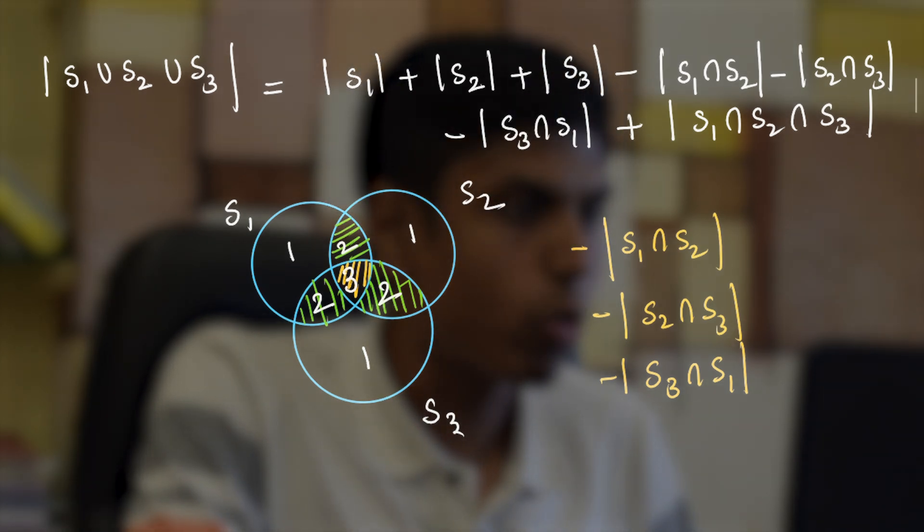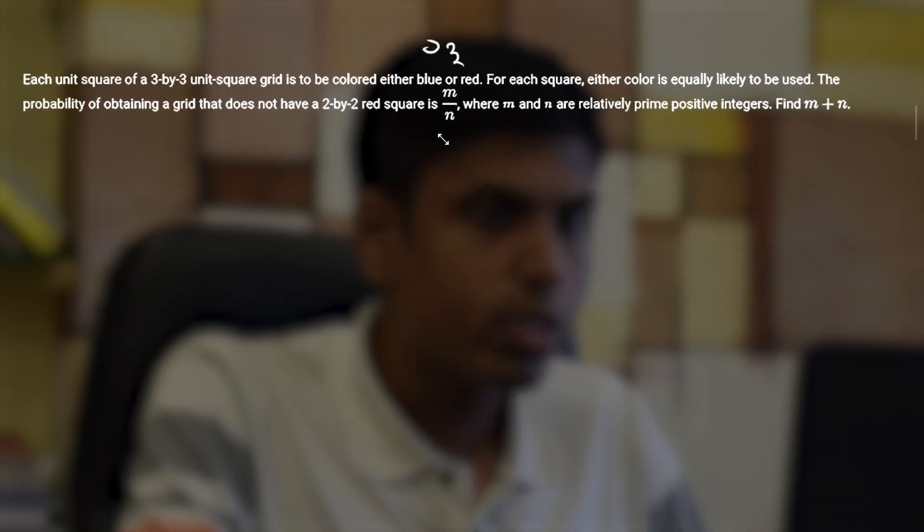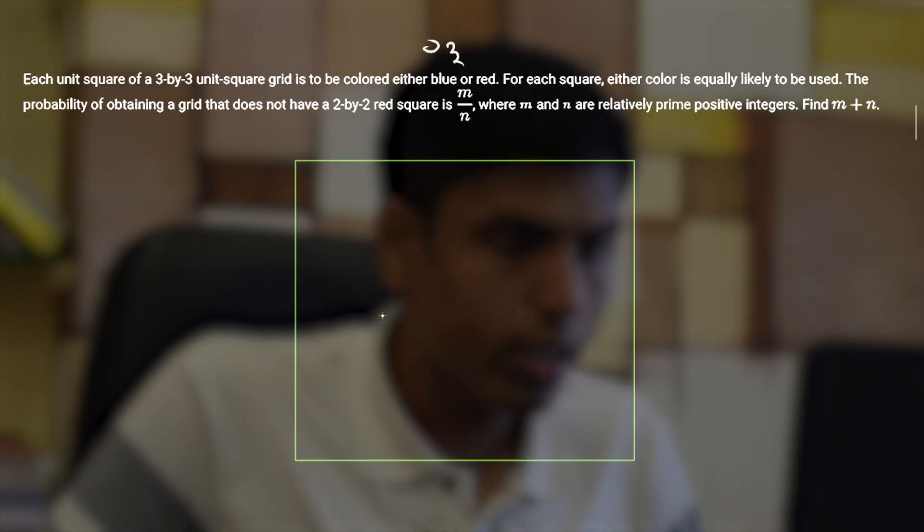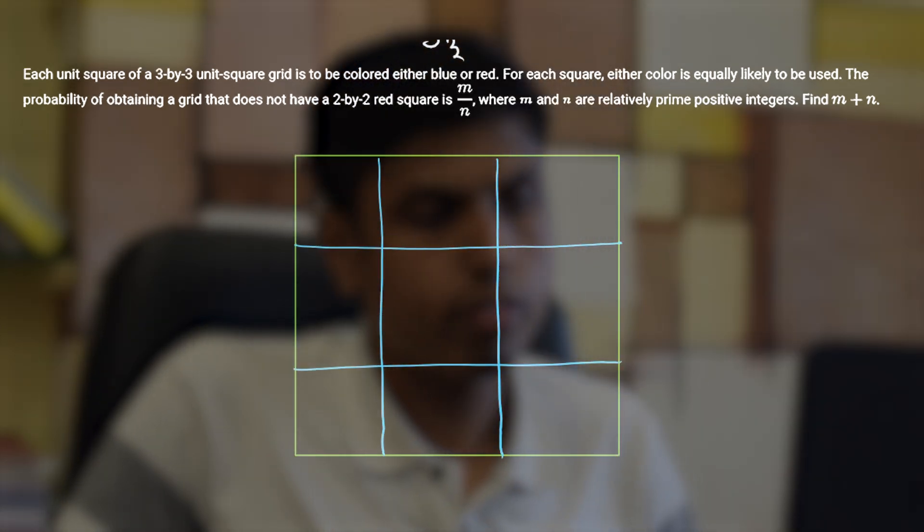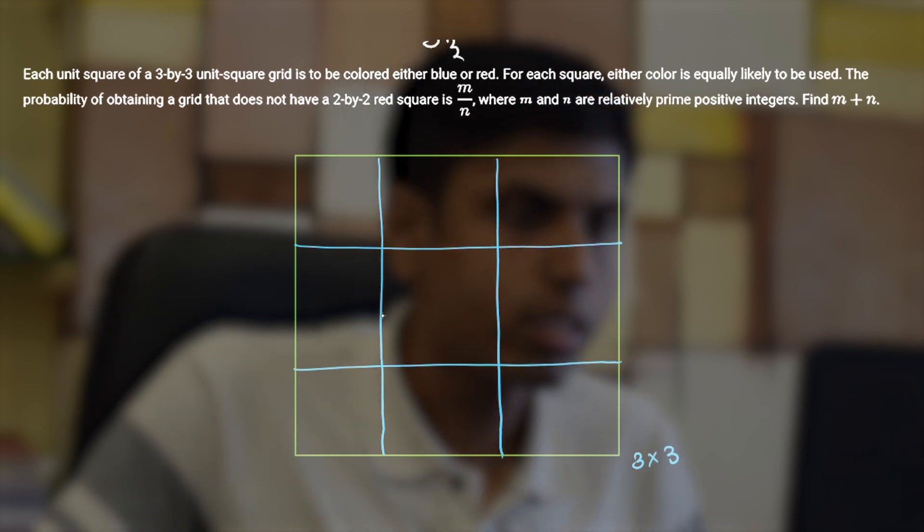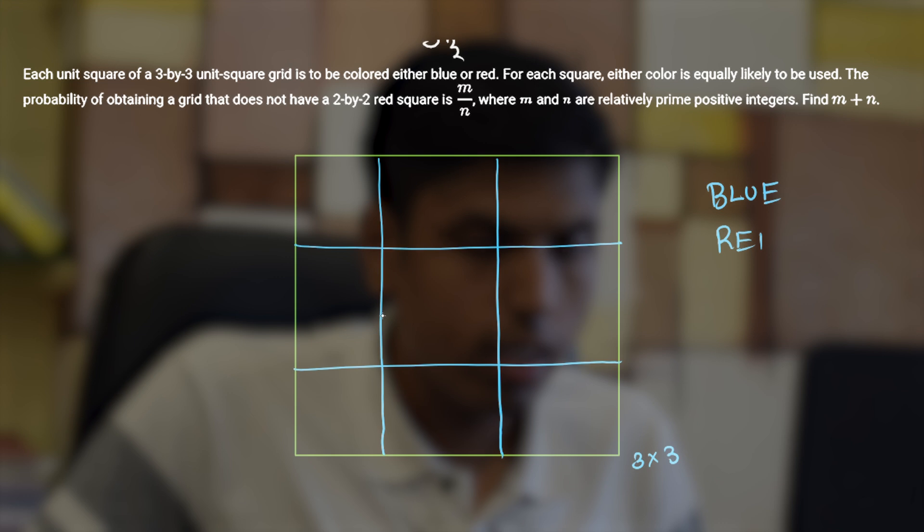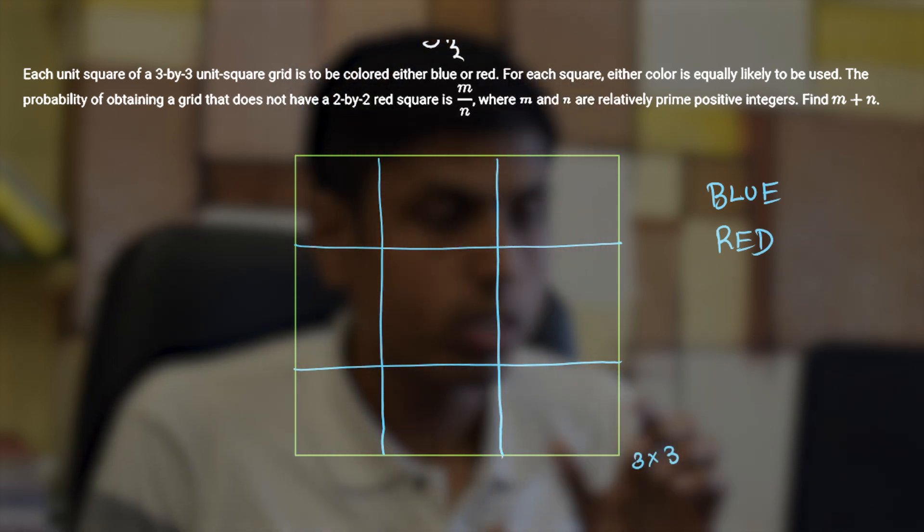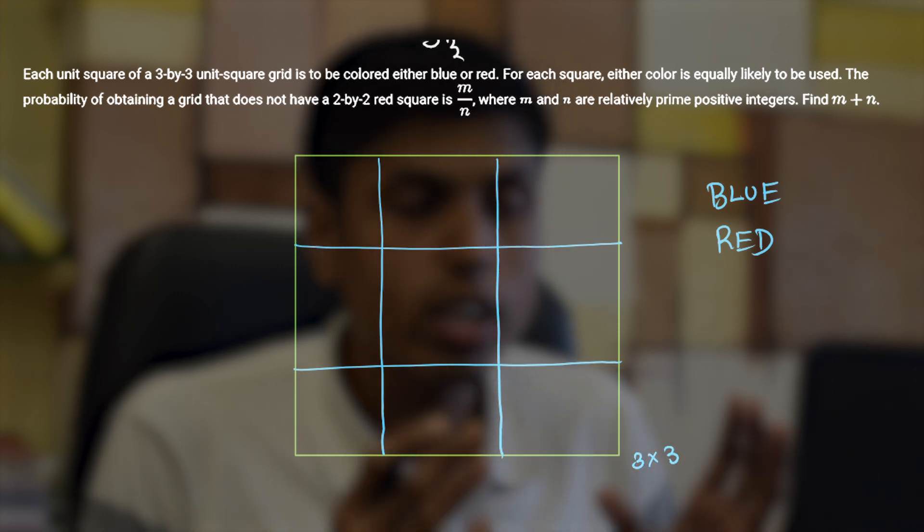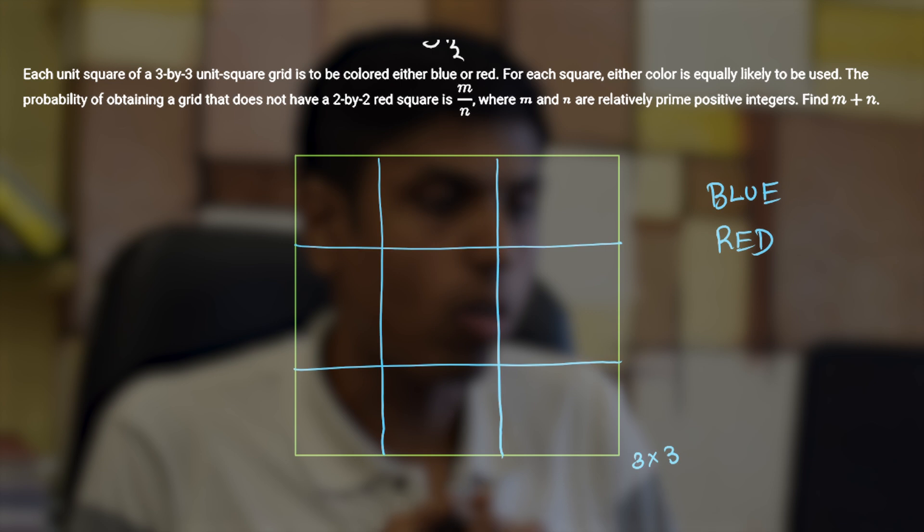So let's quickly solve a problem based on this. This is a problem from AIME 2001 and this is interesting. Consider a three by three unit grid. So it can be thought of like this and then they are colored with blue or red. And here they refer to those nine unit squares. So now we are interested to find the probability to not have a two by two grid on this three by three after the coloring.